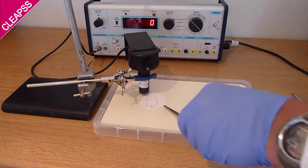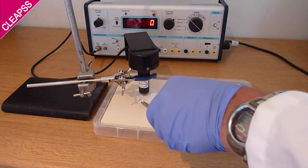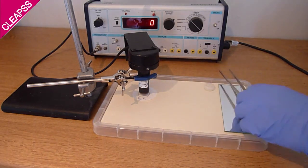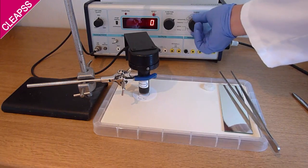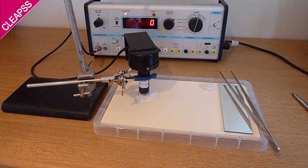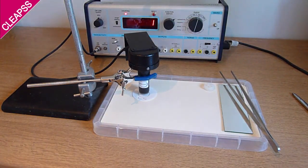Carefully slide the wipe underneath the GM tube, making sure the wipe doesn't touch the front window of the GM tube. Start the counter for 100 seconds and count.